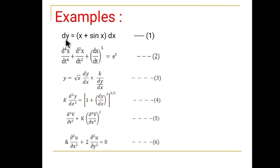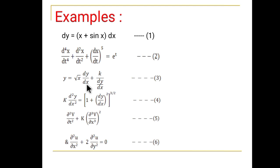In equation 1, y is a dependent variable and x is an independent variable. In equation 2, x is a dependent variable and t is an independent variable. In equation 3, y is a dependent variable and x is an independent variable. We have the same in equation number 4.